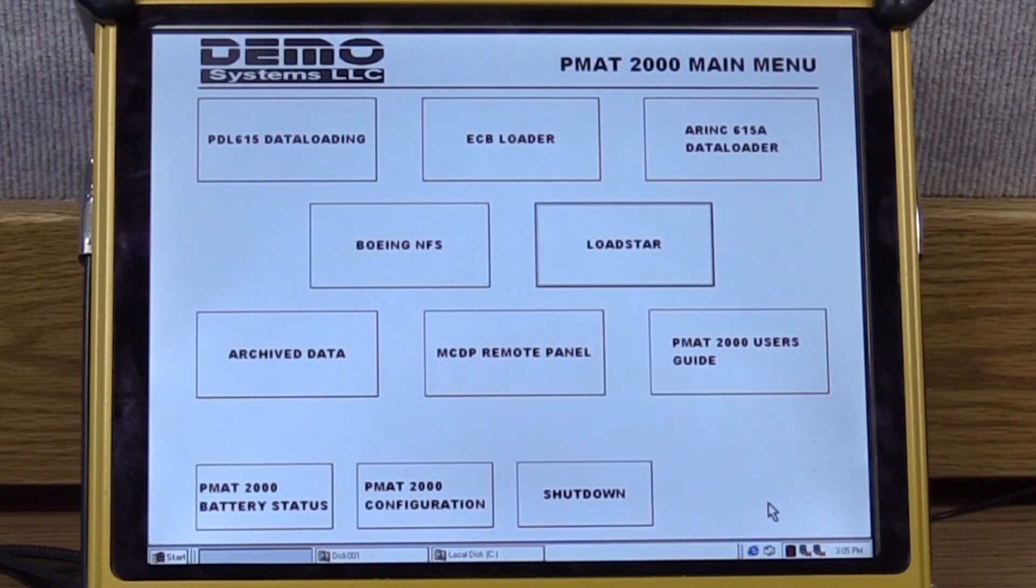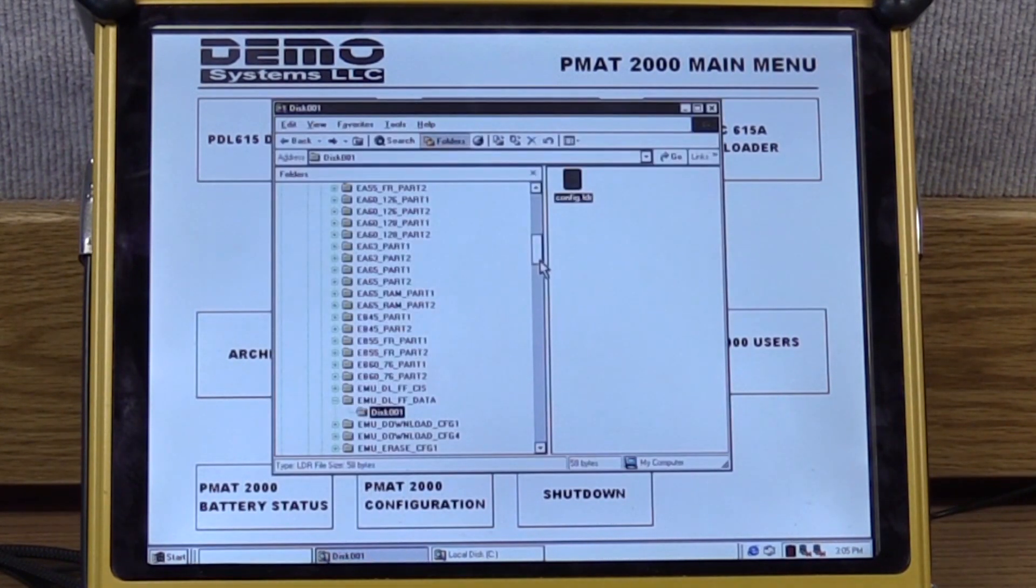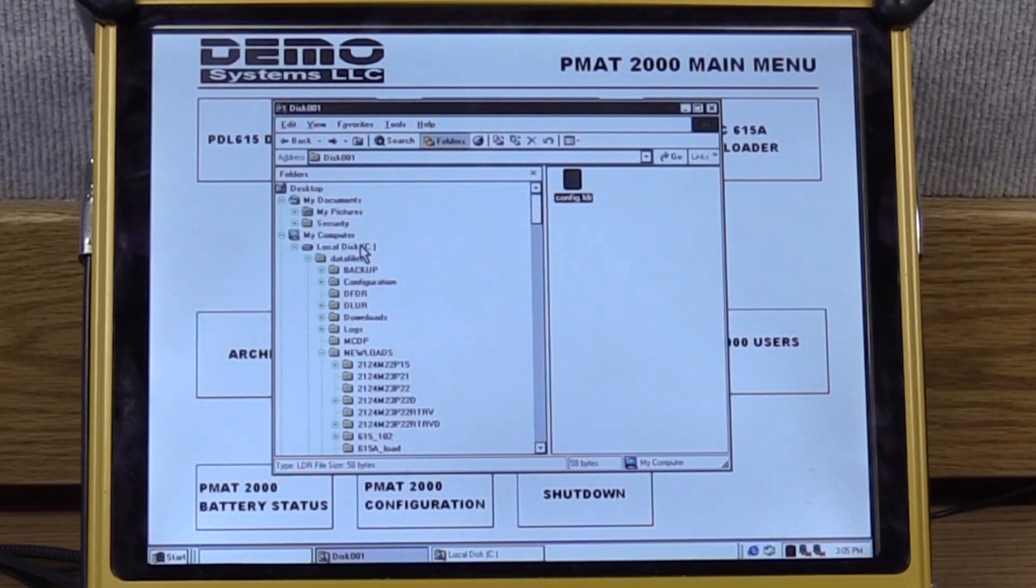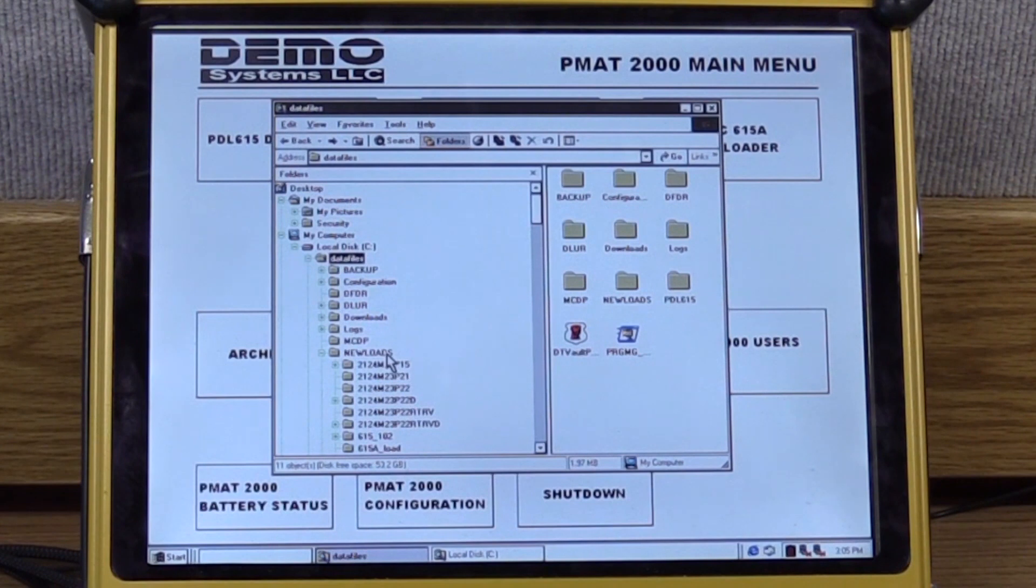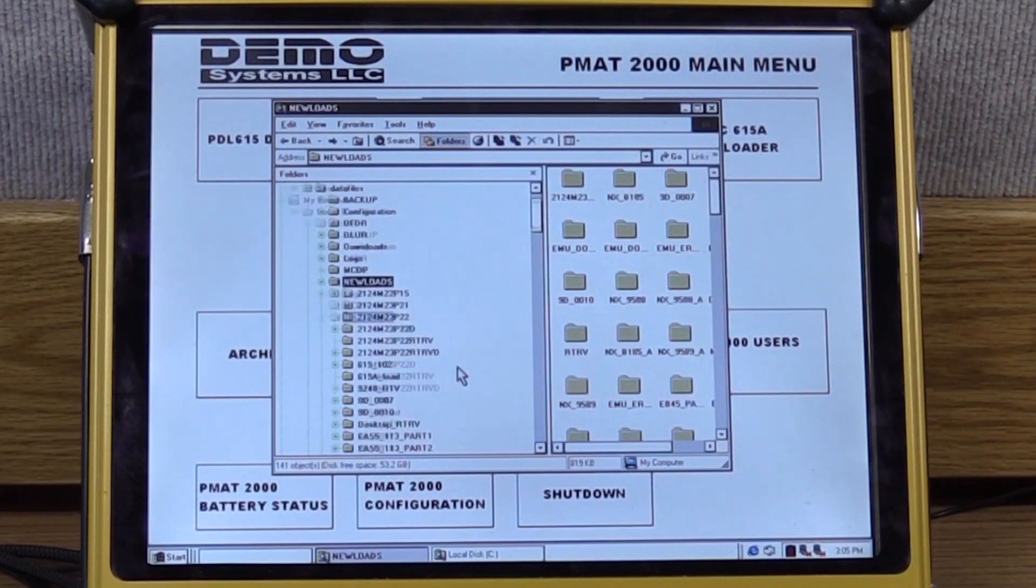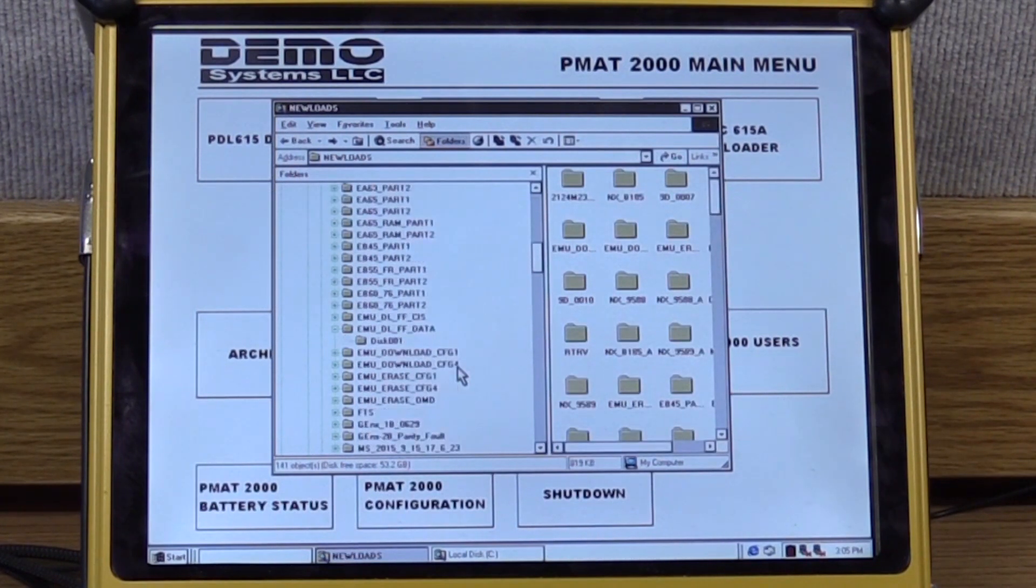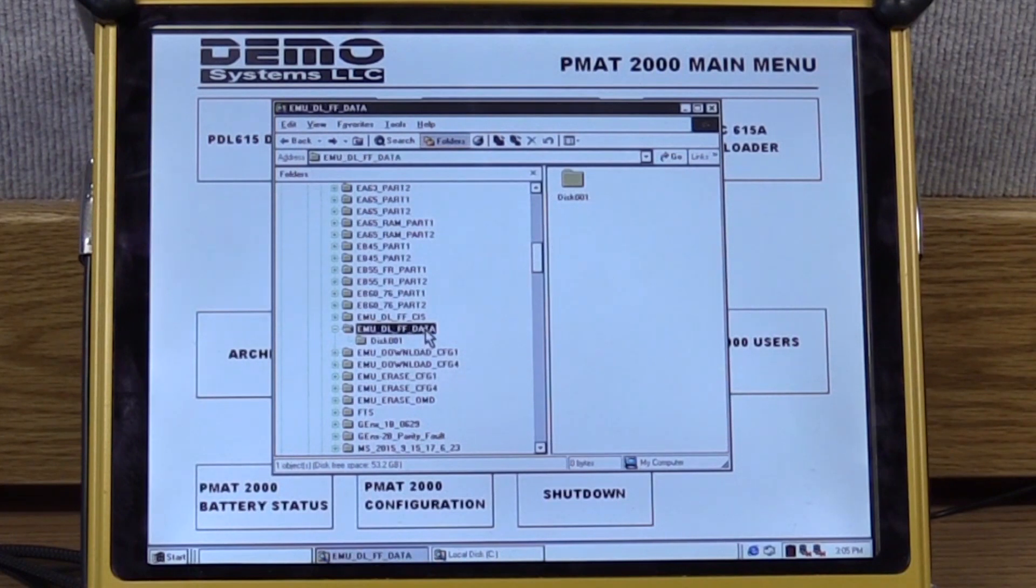The location of the config file on the PMAT should be C drive, data files, new loads, EMU DLFF data, disk 001 and within that disk 001 folder you'll see contains the config.ldr file.